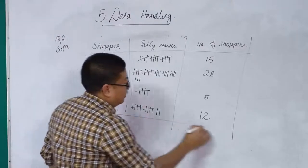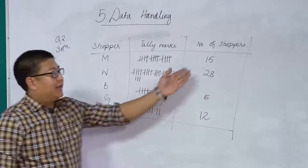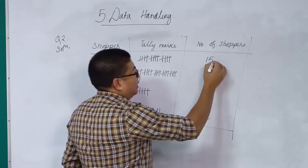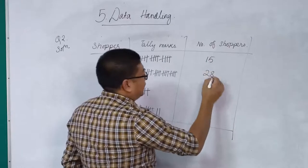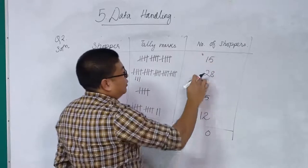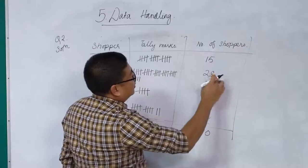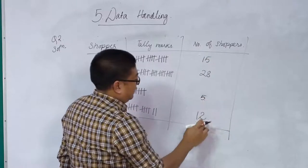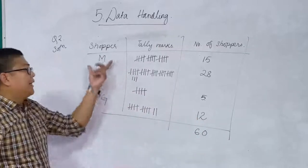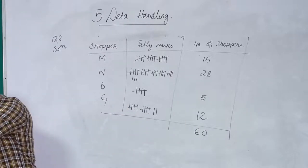Now we have the frequency distribution table. To verify, add up all the frequencies: 15 plus 28 plus 5 plus 12 equals 60. So the total data collected is 60 shoppers. With this data, we are going to draw a bar graph.